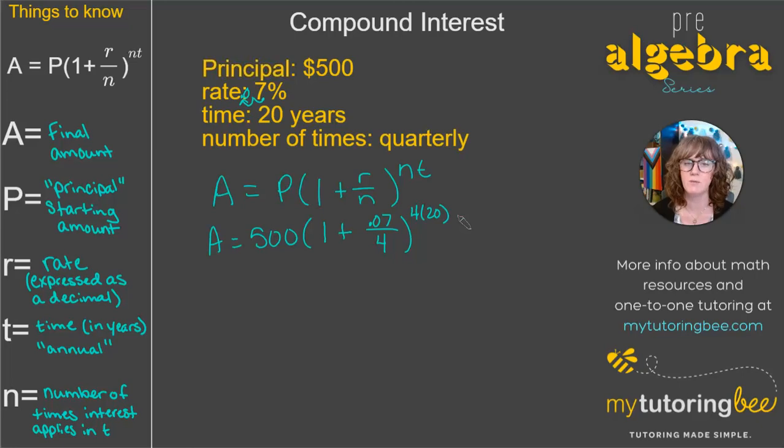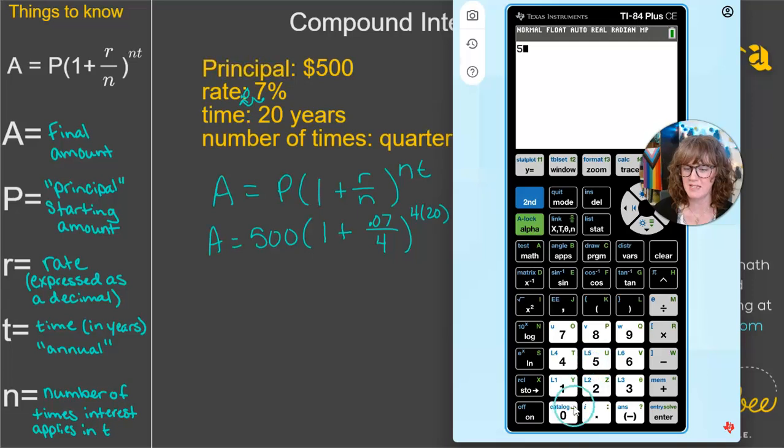All right, and now we just have to calculate. We do always want to use order of operations. I've pulled up my calculator so that you can see how I am calculating all of this. So we've got 500 times 1 plus 0.07 divided by 4, close parentheses, and my calculator will take care of order of operations for me. And then it's going to be raised to the 4 times 20 power. And let's see what we get.